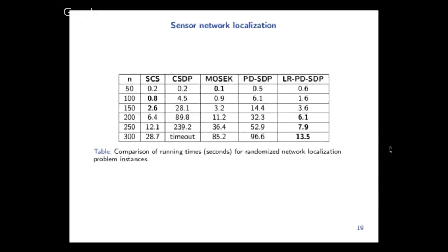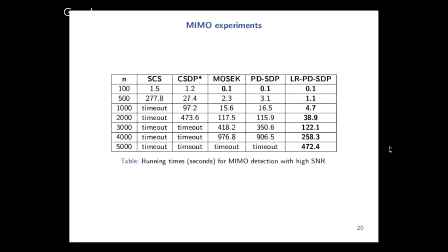Same goes for this other problem, which is the sensor localization problem. The more surprising result is this MIMO experiment, which we know in advance has a rank-one solution. Most of the solvers basically have a timeout, and we were able to solve this 5000 by 5000 matrix, which is kind of a big deal for SDP.